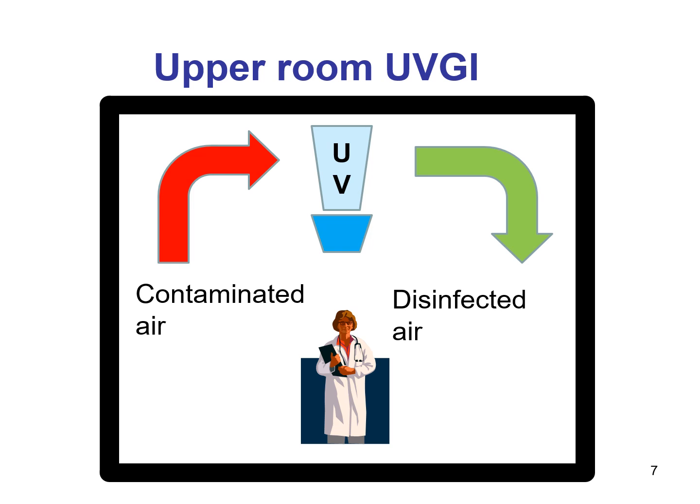The ventilation system mixes the disinfected air with the contaminated air. The UV lamp is mounted high on the wall or suspended from the ceiling. Radiation is directed into the upper portion of the room where air is disinfected. The ventilation system then mixes this disinfected air with the air in the lower part of the room, resulting in dilution of the potentially contaminated air.